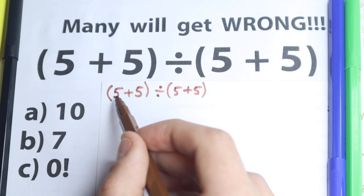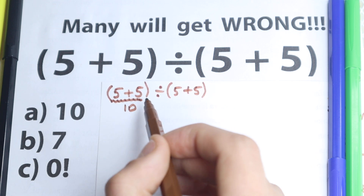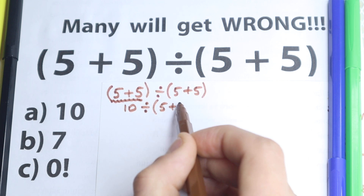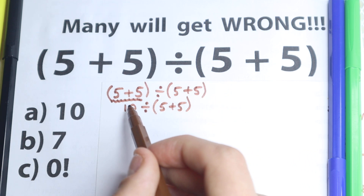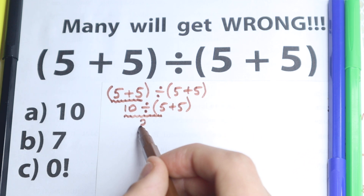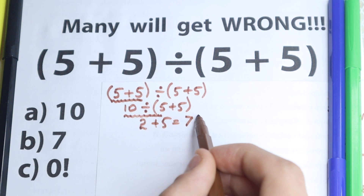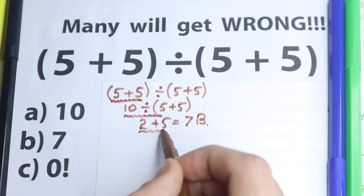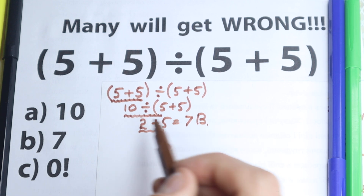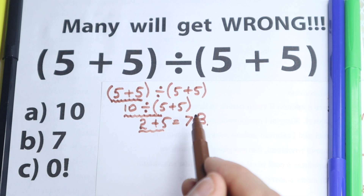First of all they start from the left-hand side, which is correct obviously, but we have 5 plus 5 equal to 10, and they rewrite this expression as 10 divided by 5 plus 5. And right here a lot of students do this wrong step because they go from left to right once more — so 10 divided by 5 equals 2, plus 5. So this looks like the correct answer is option B, which is 7. This is absolutely incorrect because we have addition, then division, then addition — a chaotic method, a very bad order of operation.